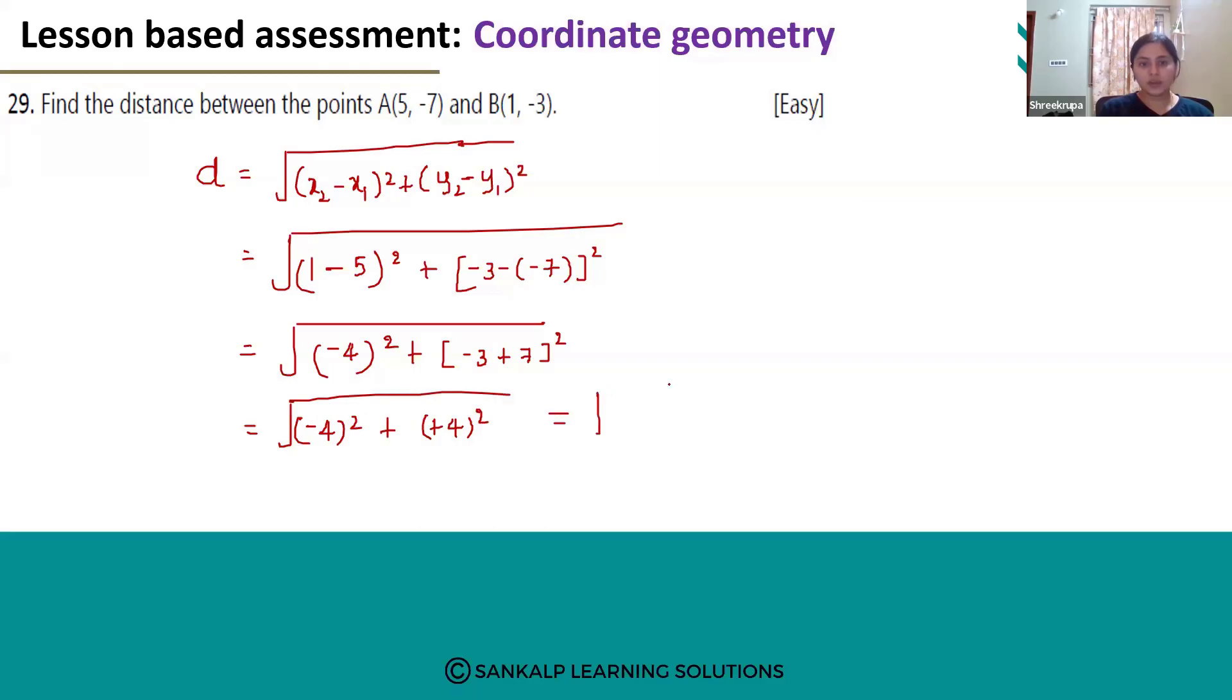Which is nothing but 16 plus 16. 16 plus 16 is 32 and I'll write this 32 as 16 into 2. So you can split this into √16 into √2 which is nothing but 4√2.